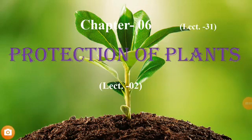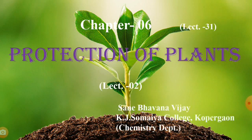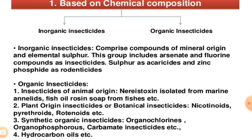Hello students, this is chapter number 6, Protection of Plants, and this is the 31st lecture. Today's topic is classification on the basis of chemical nature and source of supply.